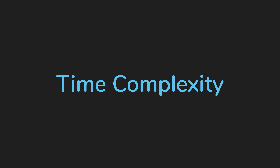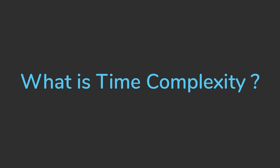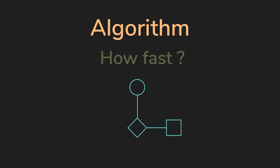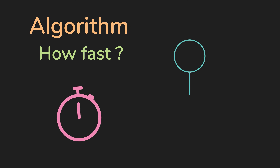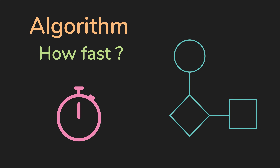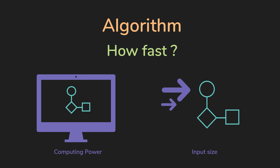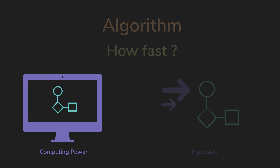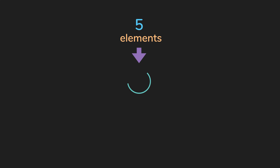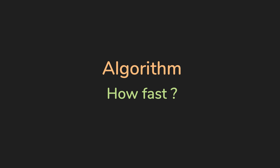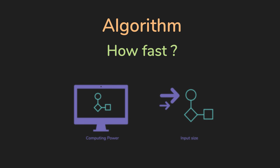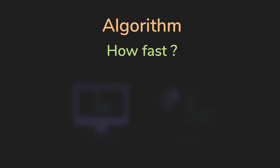In this video, we will learn about time complexity. What is time complexity and why do we care? When you want to express how fast an algorithm runs, simply measuring the time it takes to run would not be a good idea. That's because the results would depend on other factors like how fast the computer is, or the size of the input. So we need a generalized way of expressing how fast an algorithm is able to run, regardless of the size of the input or other factors. And that is what time complexity is all about.